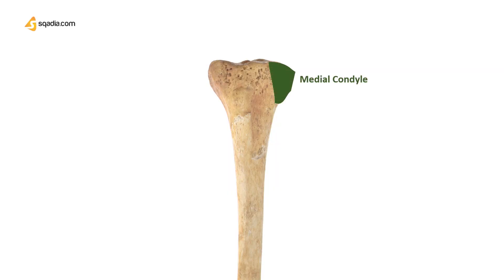This is the medial condyle, which is involved in the formation of the knee joint. The lateral condyle contains Gerdy's tubercle, which is the site of attachment for the ITB — the iliotibial tract.